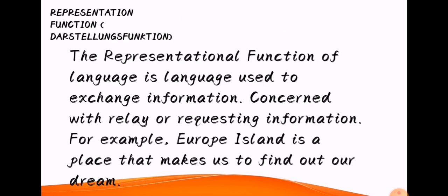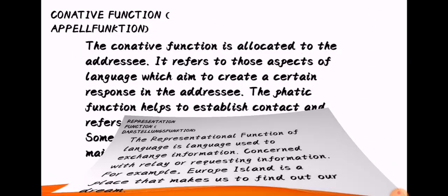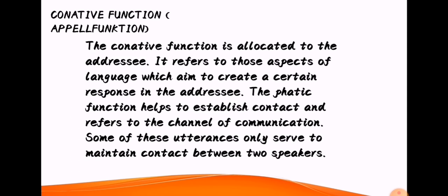Second is the representational function. The representational function of language is language used to exchange information, concerned with relaying or requesting information. Third is the conative function. The conative function is allocated to the addressee and refers to those aspects of language which aim to create a certain response in the addressee. The phatic function helps to establish contact and refers to the channel of communication. Some utterances only serve to maintain contact between two speakers.